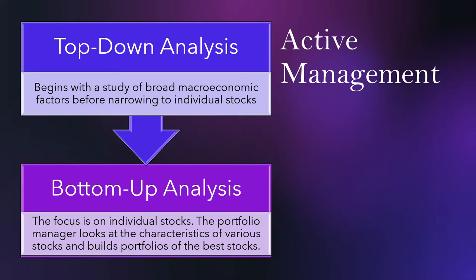Within active management, there are two different types. Top-down analysis begins with a study of broad macroeconomic factors before narrowing to individual stocks. On the opposite side, bottom-up analysis focuses on individual stocks — the portfolio manager looks at the characteristics of various stocks and builds a portfolio based on the stocks they think will perform the best.